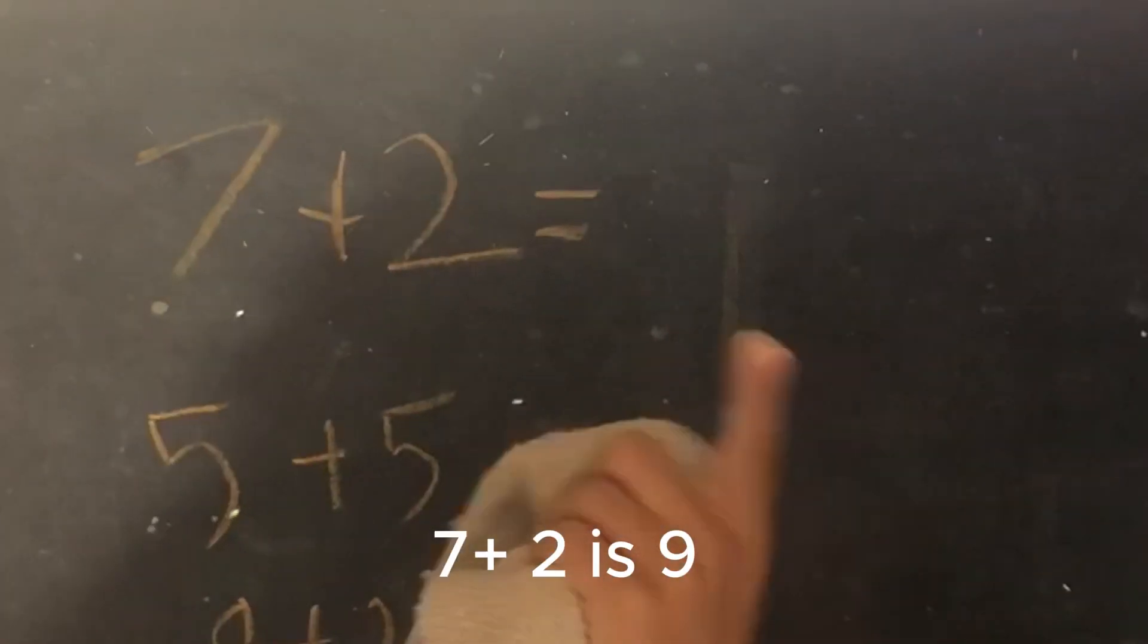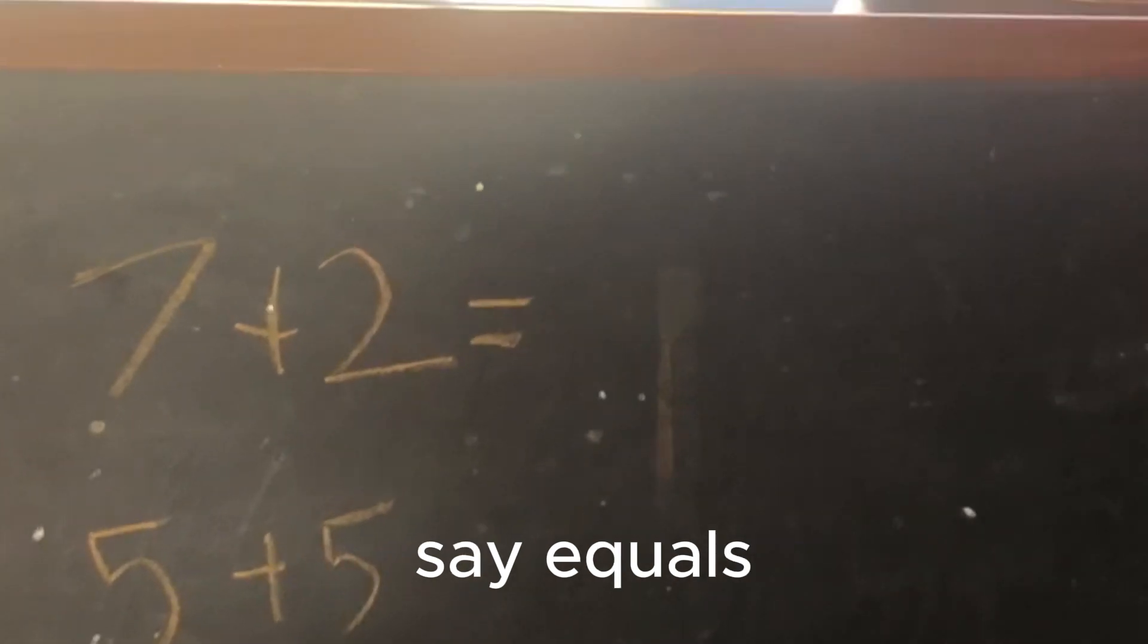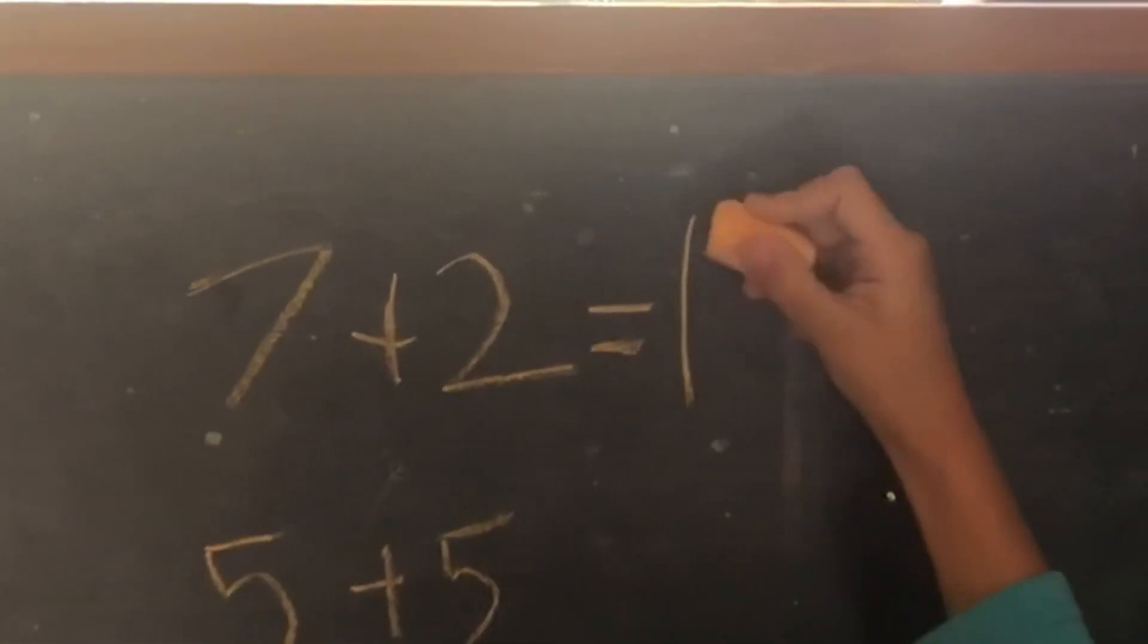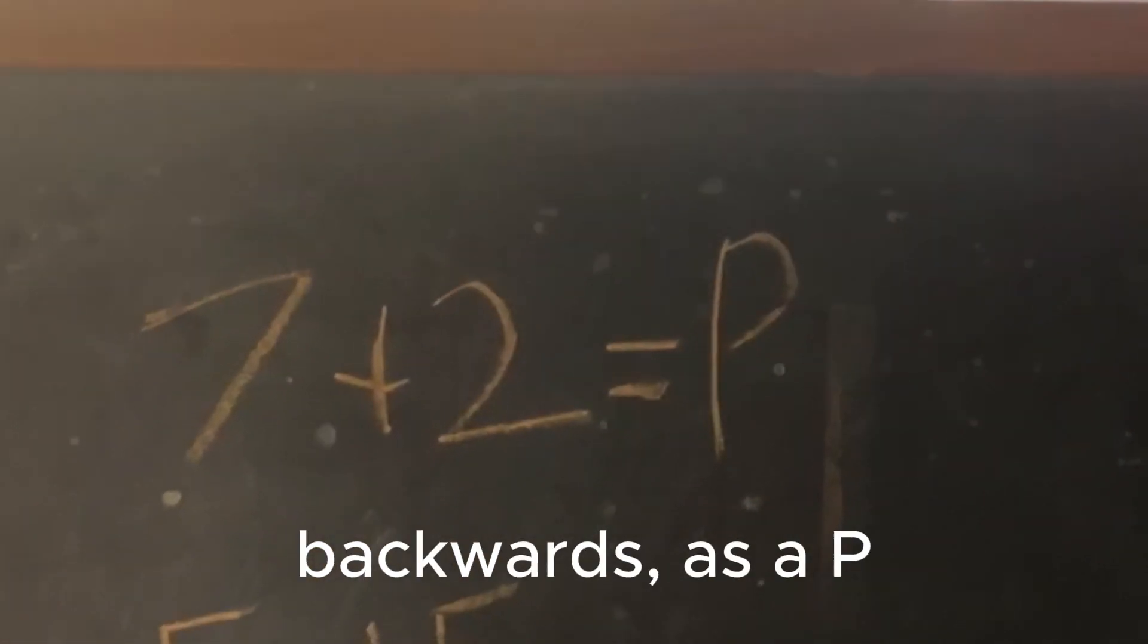Seven plus two is nine. Equals—you have to say equals. You wrote your nine backwards as a T.